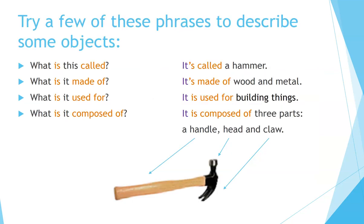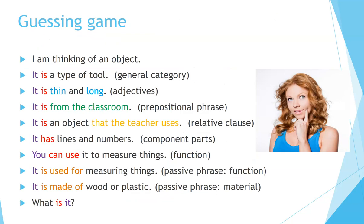Try a few of these phrases to describe some objects. For example, what is this called? It's called a hammer. What is it made of? It's made of wood and metal. What is it used for? It is used for building things. What is it composed of? It is composed of three parts: a handle, head, and claw.